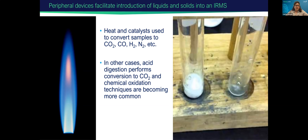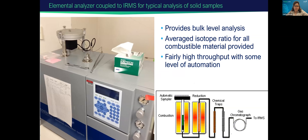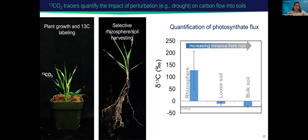We can attach peripheral devices to facilitate introduction of liquids and solids into the IRMS, including heat and catalysts as well as acid digestion. Elemental analyzers can be coupled to an IRMS for typical analysis of solid samples, giving us a bulk isotope value — everything in your sample is combusted and you get one isotope value from that sample. A study that used this method put labeled CO2 into an environmental chamber and then harvested the rhizosphere and soil from plants. What they saw was that in drought conditions, this labeled carbon remained within the rhizosphere and very little of it made its way into the bulk soil.